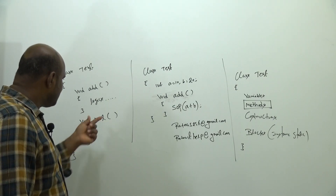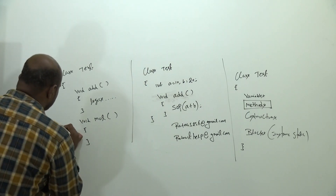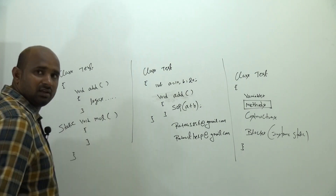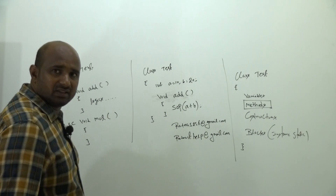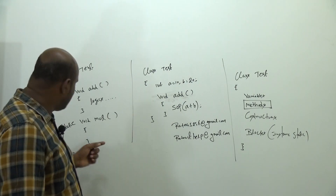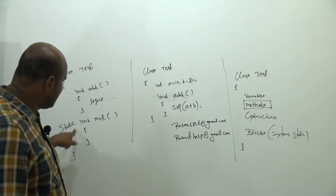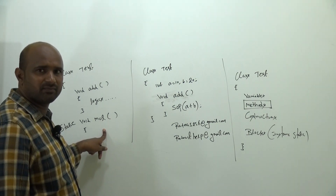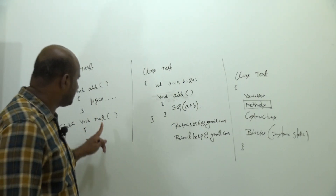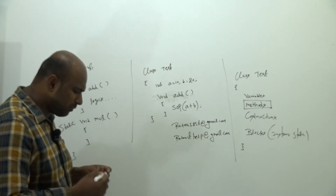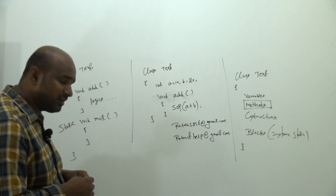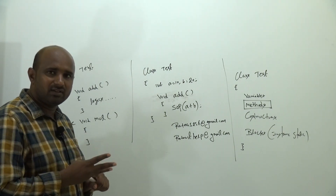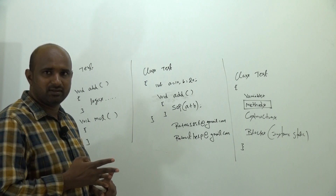But if in front of the method you declare the static modifier, then that method becomes a static method. There are two types of methods: one is the instance method, and the second is the static method.